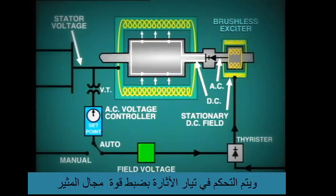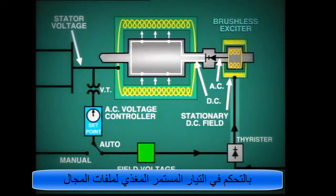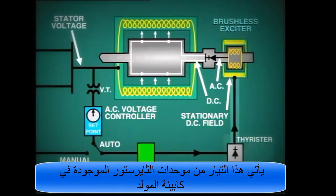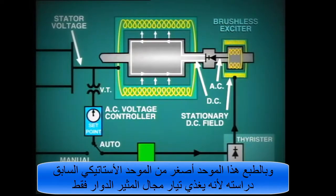Control of the DC excitation current is affected by adjusting the strength of the exciter magnetic field, and this is done by controlling the DC current flow through the field winding. This DC field current is supplied from a rectifier which is located in a nearby cabinet. Of course, this rectifier is much smaller than the static rectifier previously studied, because it is only supplying field current to the rotating exciter.